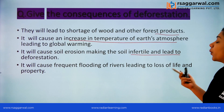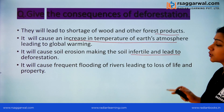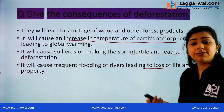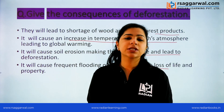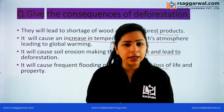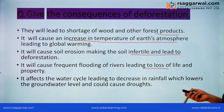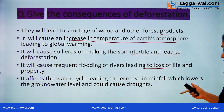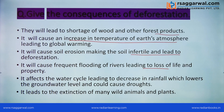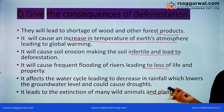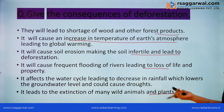Next, it will cause frequent flooding of rivers, leading to loss of life and property. Flooding occurs because without trees, water cannot be absorbed properly. Deforestation also affects the water cycle, leading to a decrease in rainfall, which lowers the groundwater level and could cause droughts. So deforestation can lead to both floods and drought conditions. It also leads to the extinction of many wildlife animals and plants, since forests are the home for many species.